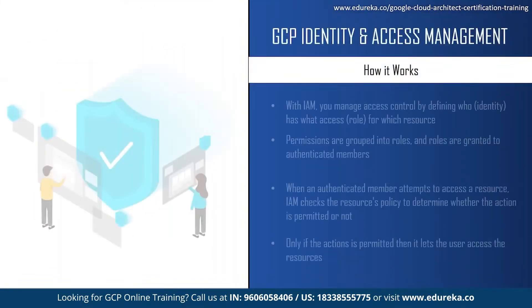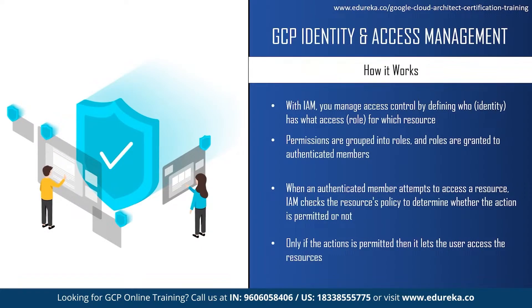With Identity and Access Management, you can manage access control by defining who has what access for which resources — such as Compute Engine virtual machine instances, Google Kubernetes Engine clusters, or Cloud Storage buckets. In IAM, permission to access a resource is not granted directly to the end user. Instead, permissions are grouped into roles, and roles are granted to authenticated members. An IAM policy defines and enforces what roles are granted to which members, and this policy is attached to a resource. IAM checks the resource policy to determine whether the action is permitted.